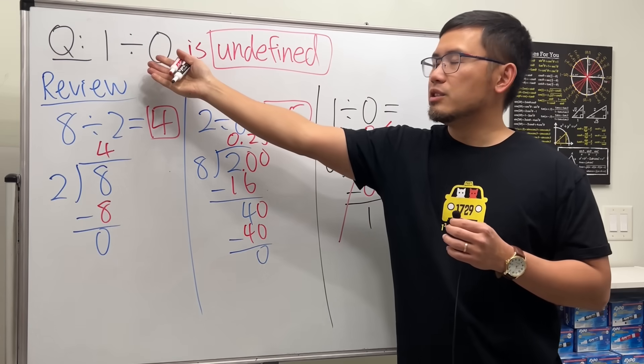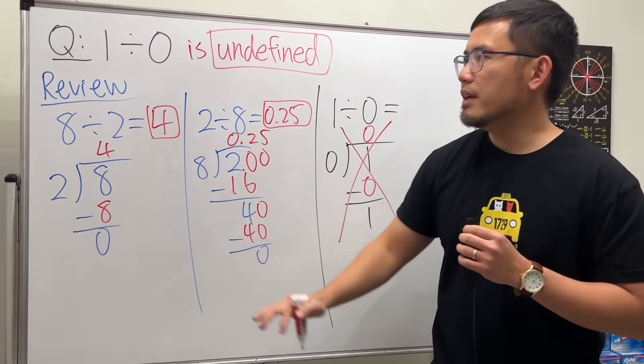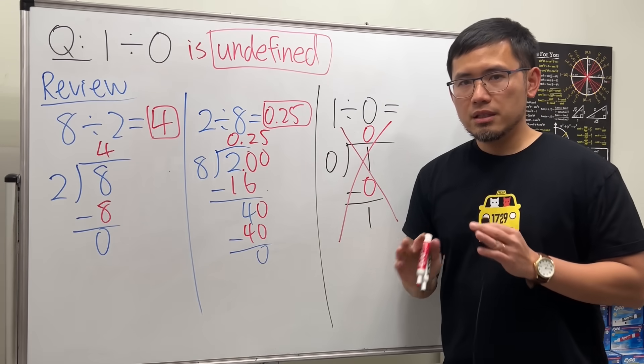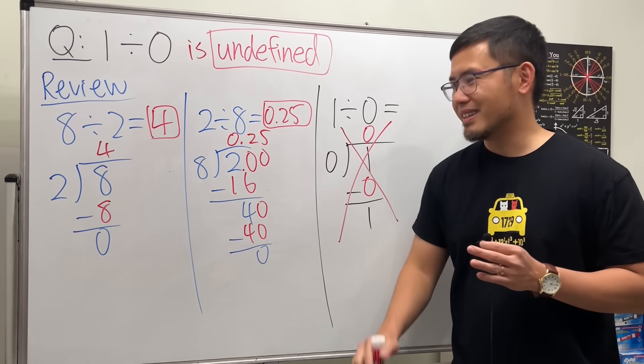Meaning, there's no answer for this. In fact, when you have any number divided by 0, it's always going to be undefined. This is just computation. We're not doing calculus or whatnot, all right?